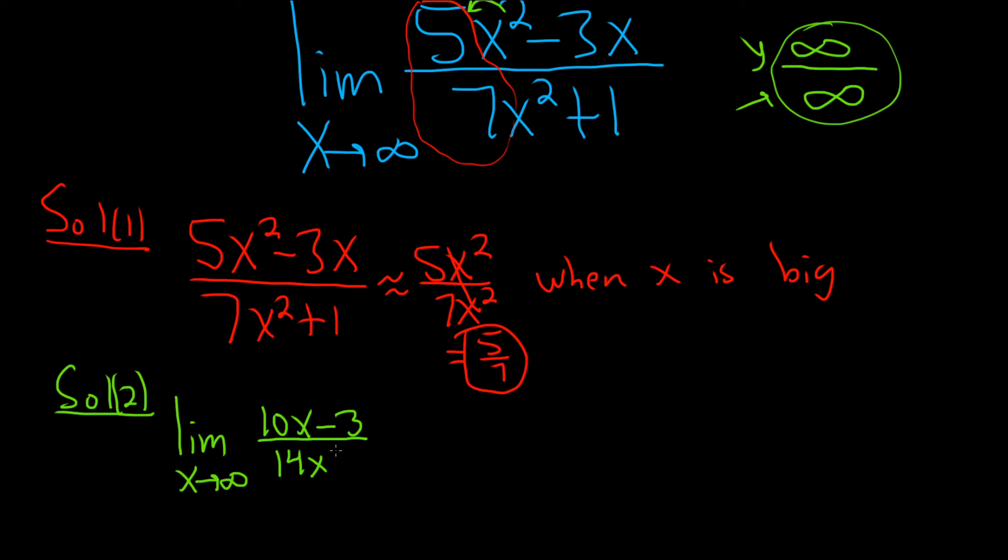Notice it still has the form infinity over infinity, so use L'Hopital's rule again. So this is equal to the limit as x approaches infinity of 10 over 14. The derivative of x is 1. So you have 10 over 14, so this is the limit as x approaches infinity of 5 sevenths. But that's just 5 sevenths.